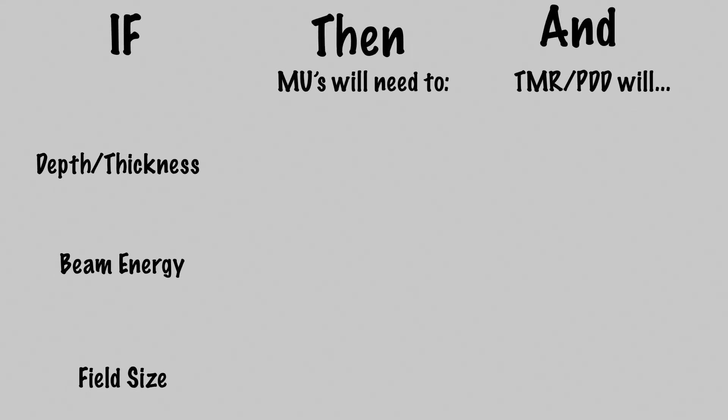Okay, let's recap. We learned how target depth and patient thickness, SSD, field size, and beam energy affect the MUs needed to treat a patient, and the difference between PDD and TMR. We will apply these concepts with calculations using clinical scenarios in our next video.